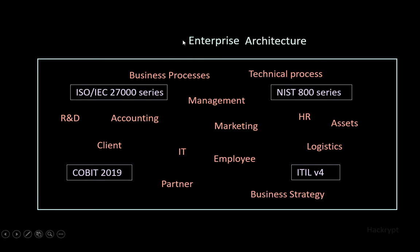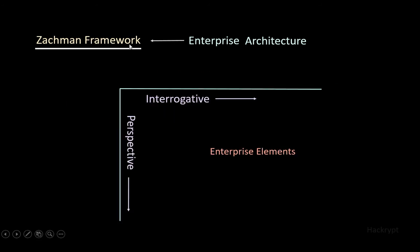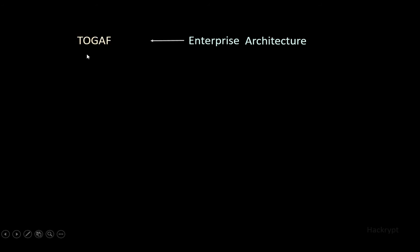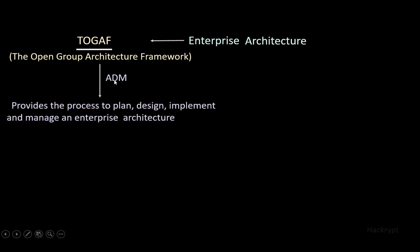We need to understand the relationships between enterprise elements to use these standards effectively, and for that we need enterprise architecture. This can be designed using the Zachman framework, one of the oldest frameworks. It uses a two-dimensional approach: one dimension asks interrogative questions, and the other has different perspectives — contextual from the executive, conceptual from the manager, architectural from the architect, technological from the engineer, implementation from the technician, and enterprise-wide for the overall view. Similarly, we have TOGAF, the Open Group Architecture Framework, which uses the Architecture Development Method to plan, design, implement, and manage an enterprise architecture.